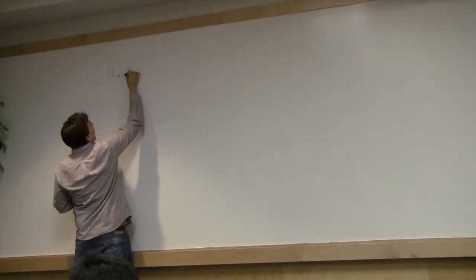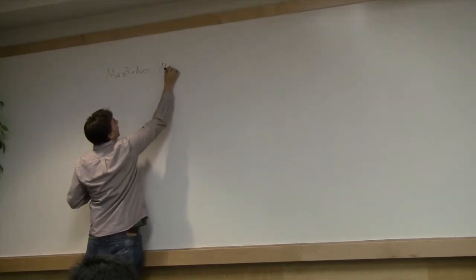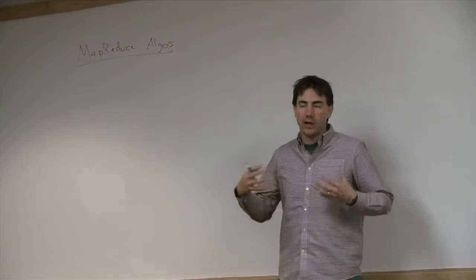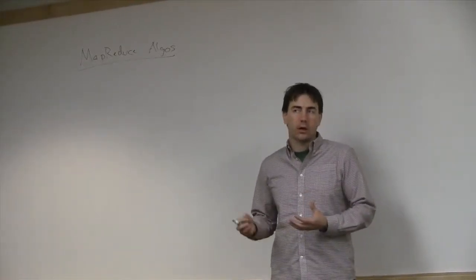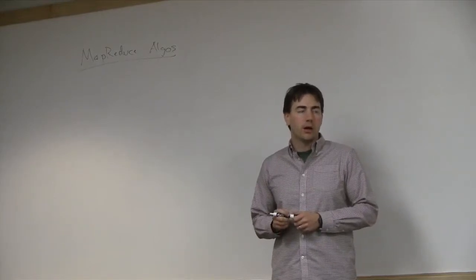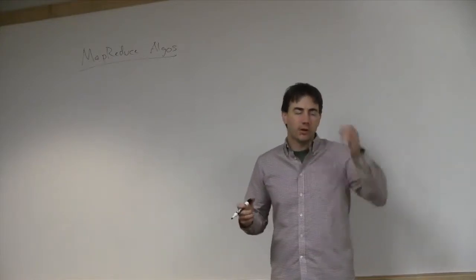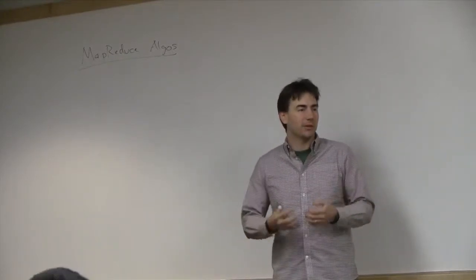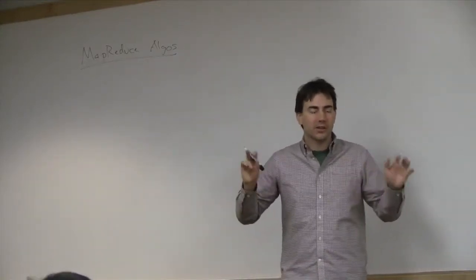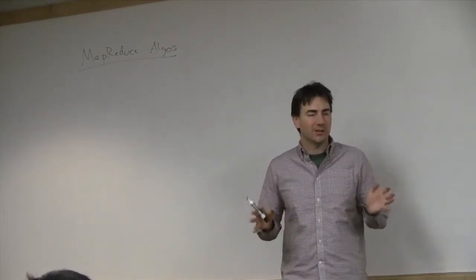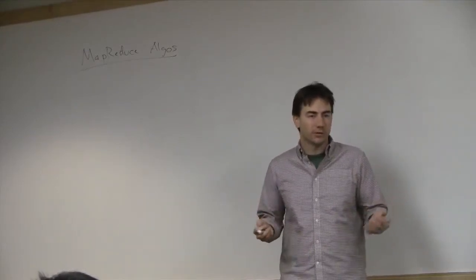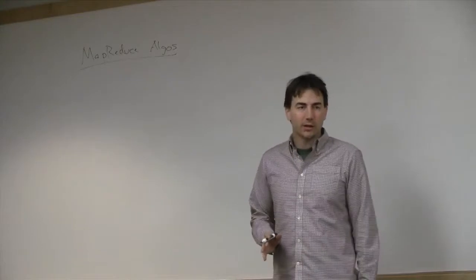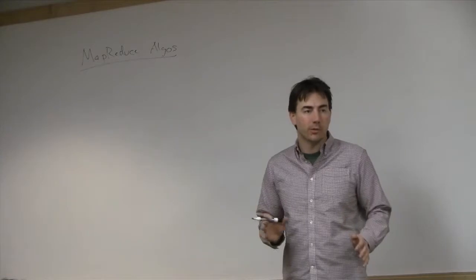We'll be talking again about MapReduce algorithms. What we'll try to do today is formalize our model of computation for MapReduce and relate this to some of the models for doing parallel computation. Some of these relations were done by people trained in theory and algorithms, using big O notations where certain constants get hidden. We'll try to dissect them, see how reasonable these models are, and discuss the assumptions made along the way.